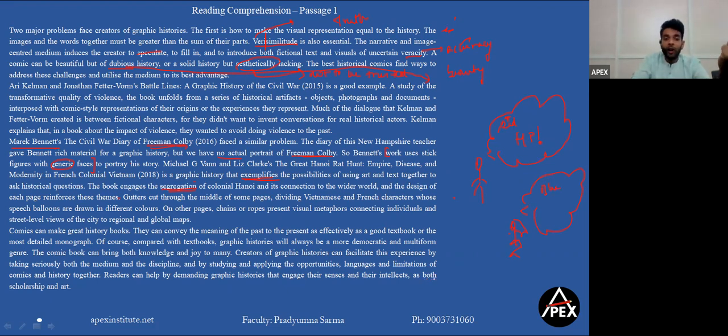On other pages, chains or ropes represent visual metaphors. So what these are just showing that this particular thing looks like this for us. It's a comparison that's been created connecting individuals and street level views of the city to the regional and global maps. All right, so he's told us about the examples, right?